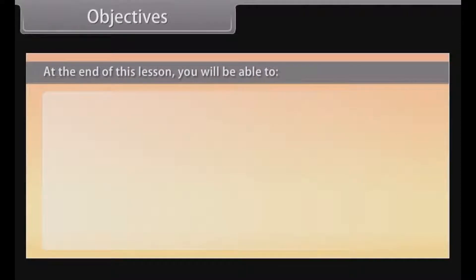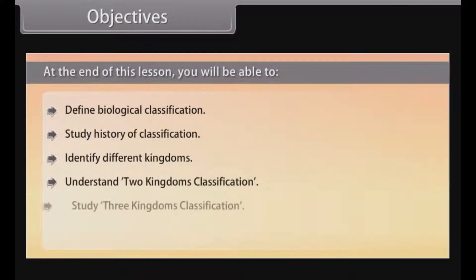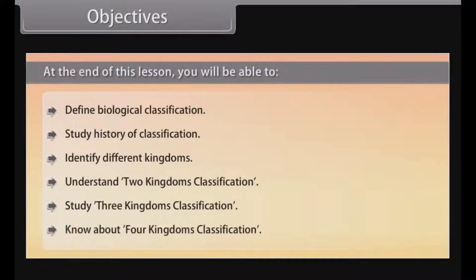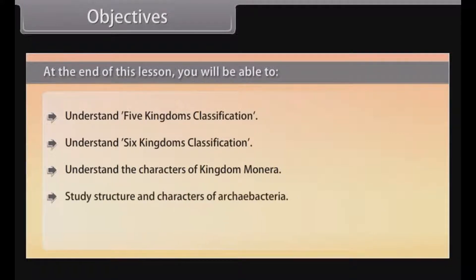At the end of this lesson, you will be able to: define biological classification; study the history of classification; identify different kingdoms; understand the two kingdoms classification; study three kingdoms classification; know about four kingdoms classification; understand five kingdoms classification; understand six kingdoms classification; understand the characters of Kingdom Monera; study the structure and characters of Archaebacteria and Eubacteria.